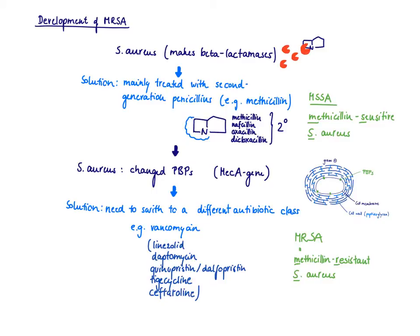As long as Staph aureus is sensitive against the second-generation penicillin, we call the Staph aureus MSSA, standing for methicillin-sensitive Staph aureus. Please note, methicillin just stands here as an example for a second-generation.